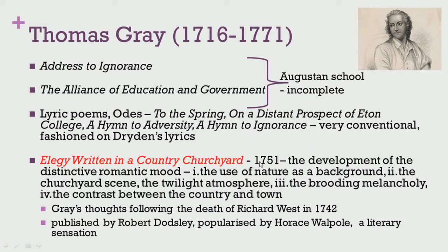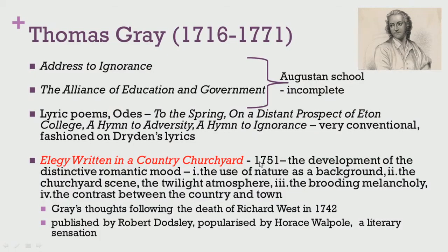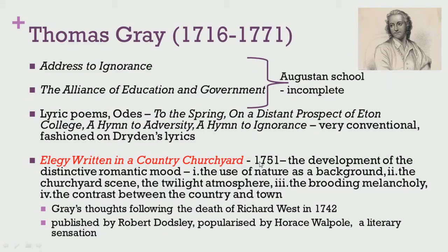There are four major elements highlighted in terms of this elegy. First and foremost was the use of nature as a background — though the major theme is related to the impermanence of man, most of the discussion happens in the background of nature. Secondly, he introduced the churchyard scene, which was a very significant development in 18th century poetry, and there was also a twilight atmosphere which gave a certain mood to this elegy. Thirdly, the treatment and tone of the poem was set to a brooding melancholy, and fourthly there was a very stark contrast being portrayed between the country and the town.